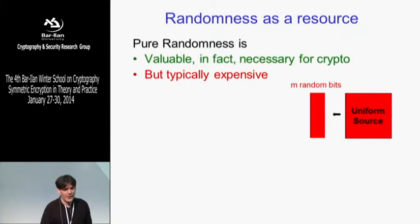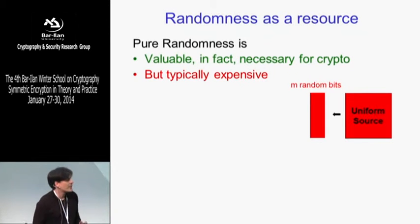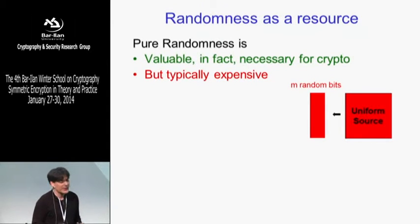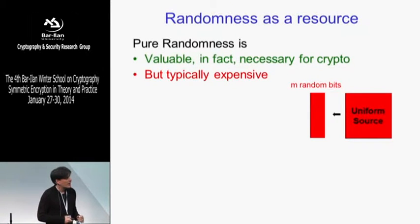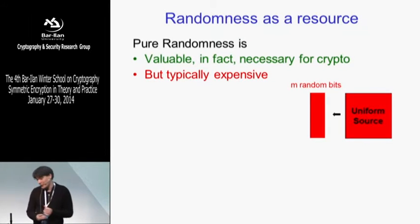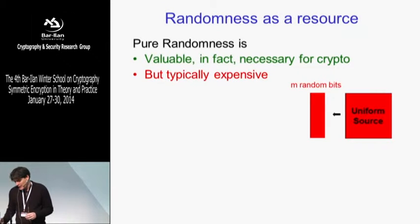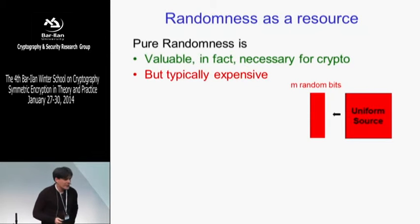In general, pure randomness is a very useful resource. We use random bits all the time, and they're not only useful in cryptography. We really need them, but typically they're expensive — generating random bits is an expensive operation. So in the next hour or so, we're going to try to reduce the cost of this resource.